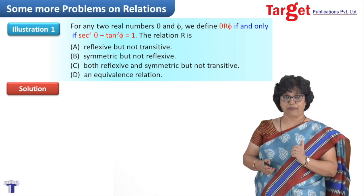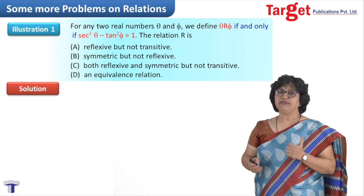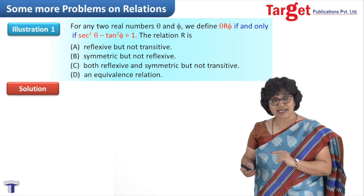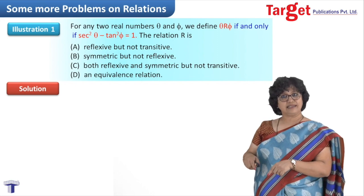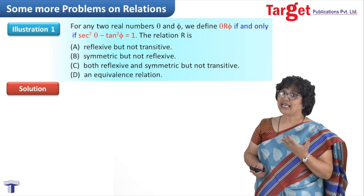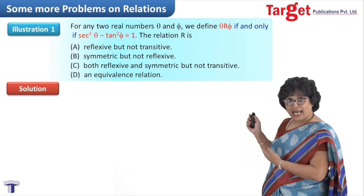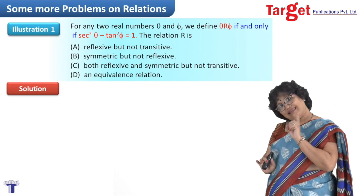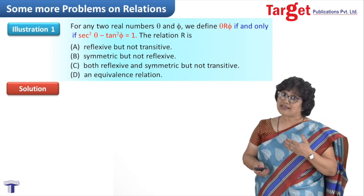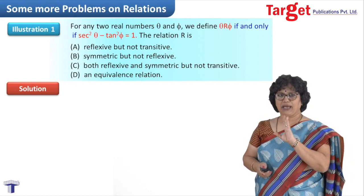All four options are regarding reflexive, symmetric, transitive, or equivalence. Recall what we have done: relation is reflexive if A is related to A; symmetric if A related to B implies B related to A; transitive if A related to B and B related to C implies A related to C. If all three conditions hold, we call it an equivalence relation. We will apply this same framework here.